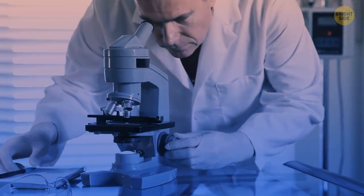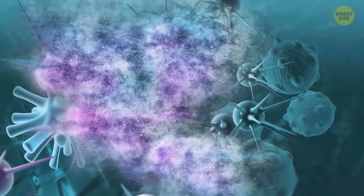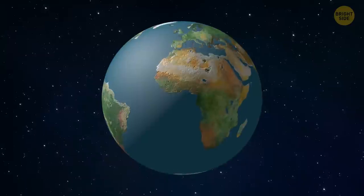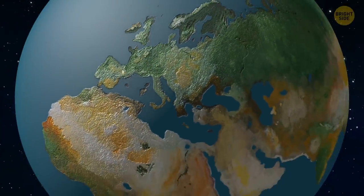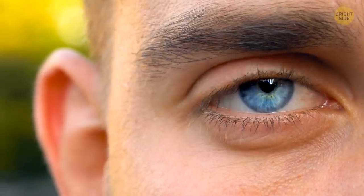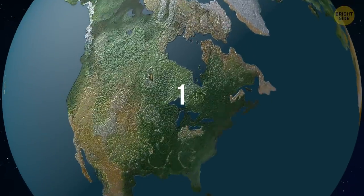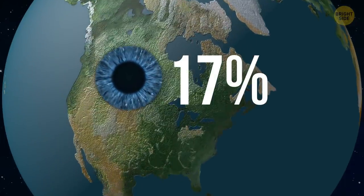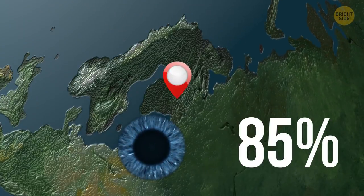That's how scientists think the first blue-eyed person appeared. First, the mutation happened. And then two people with this rare mutation had to meet and create a family. Most likely, it happened in Europe. European countries are still ones with the highest proportion of blue-eyed people. On average, 8% of people in the world have blue eyes. In the United States, around 17% of the population have them. But in Finland and Estonia, over 85% of the population are blue-eyed.